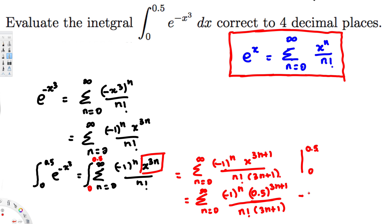The question asks for the integral correct to four decimal places. What we have to do is keep calculating terms until we get a term with four leading zeros. We neglect that term and add together all the values before it.